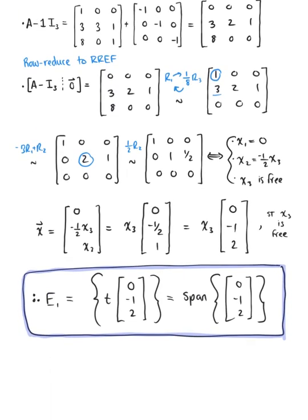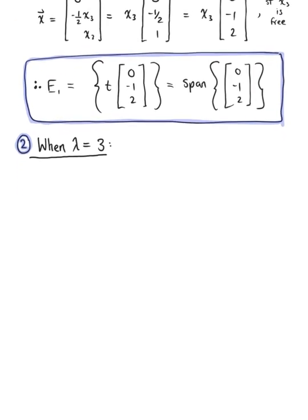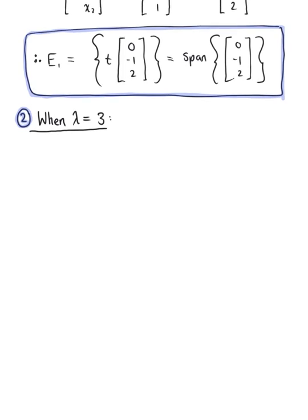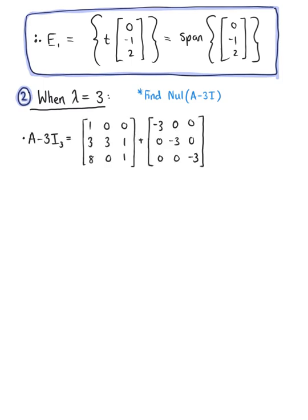We now move to case 2, where lambda equals 3. To find the eigenspace for lambda equals 3, we need the null space of A minus 3 times the identity matrix. Computing A minus 3I, row 1 is negative 2, 0, 0; row 2 is 3, 0, 1; row 3 is 8, 0, negative 2.